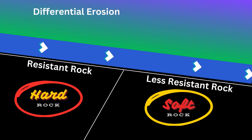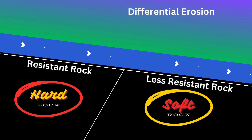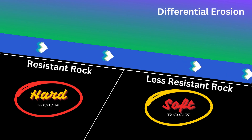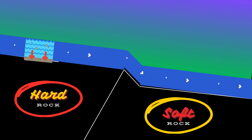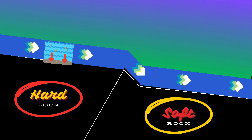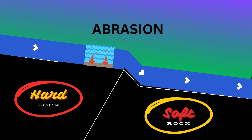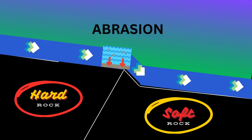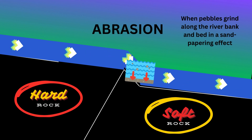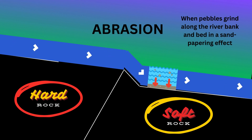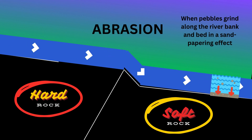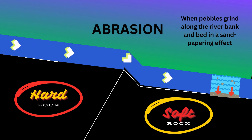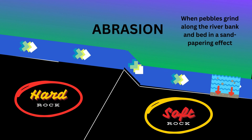These differing rates of erosion are called differential erosion. As water flows over the rock layers, it carries sediment and particles that can wear away the softer rock more quickly, creating a step-like formation. This happens through the process of abrasion.